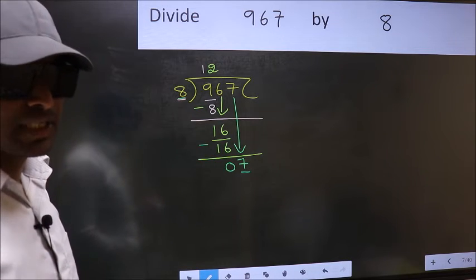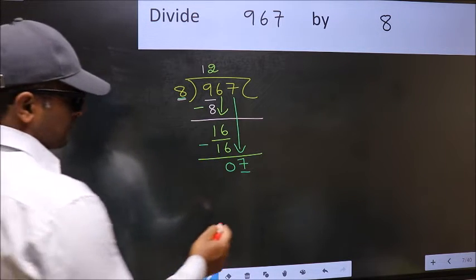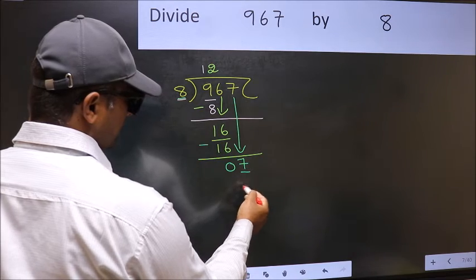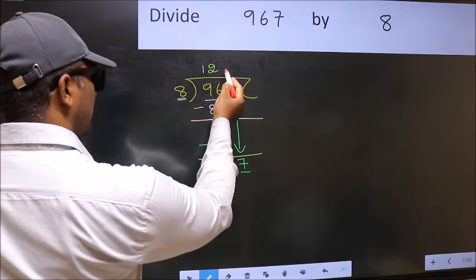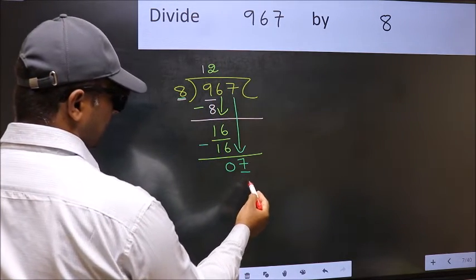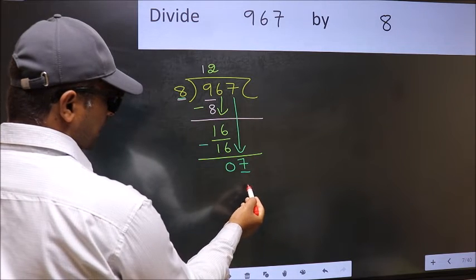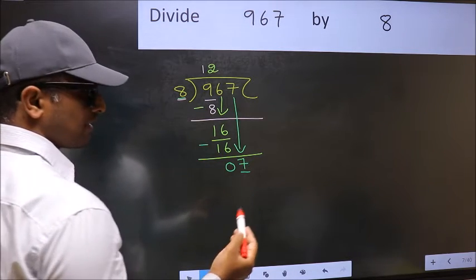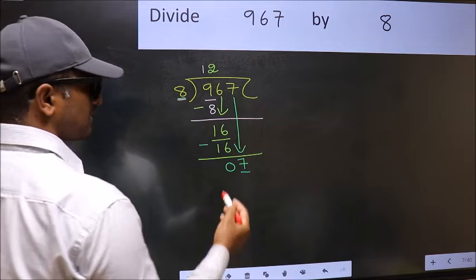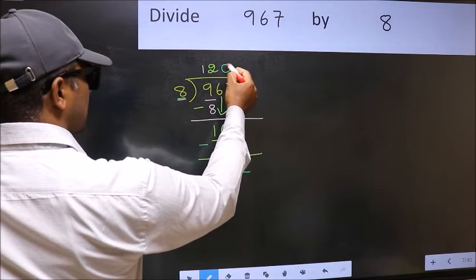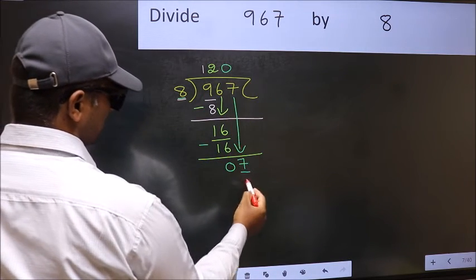Instead, what you should think of doing is, which number should we take here. If I take 1, we will get 8. But 8 is larger than 7. So what we should do is we should take 0. So 8 into 0, 0.